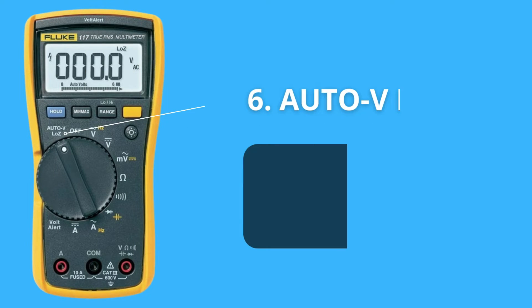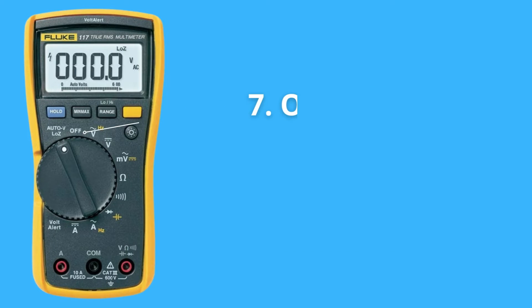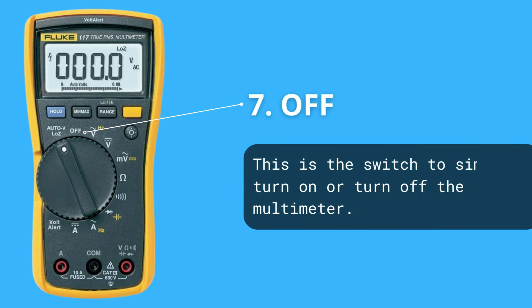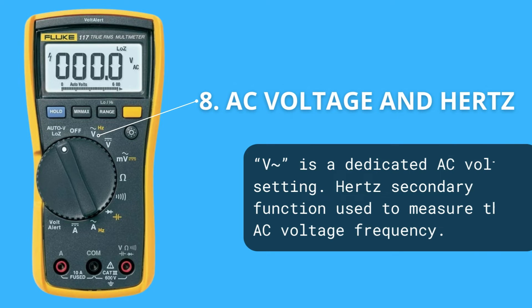The brightness button increases the illumination just like on a mobile phone. This symbol allows the multimeter to automatically measure voltage. Hour off symbol.